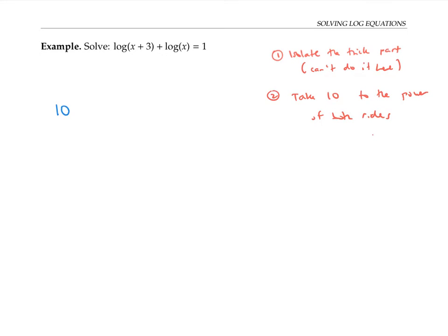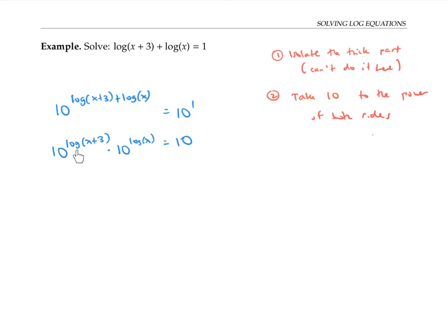That's going to give me 10 to the whole thing — log x plus three plus log x — in the exponent, equals 10 to the one power. Well, 10 to the one is just 10. But remembering my exponent rules, when you add up the exponents, that's what happens when you multiply two things. So this is the same as 10 to the log of x plus three times 10 to the log of x. Because when you multiply two things, you add the exponents. Now, 10 to the log base 10 — those undo each other — so this expression simplifies to x plus three. Similarly, 10 to the log base 10 of x is just x. So I'm multiplying x plus three by x, and that's equal to 10.